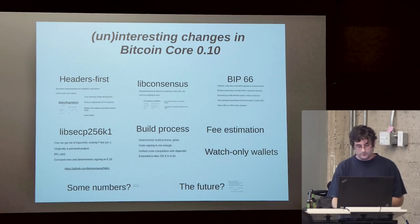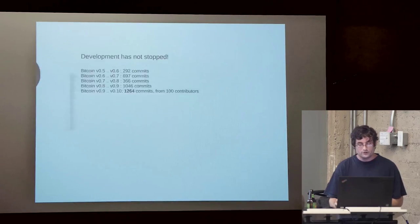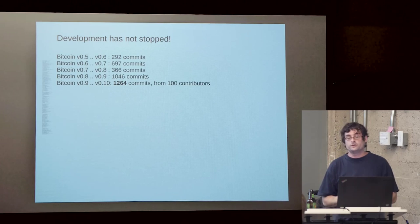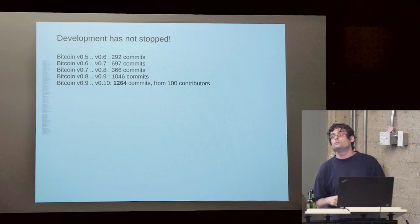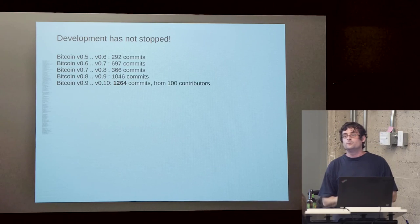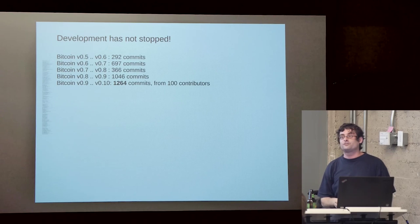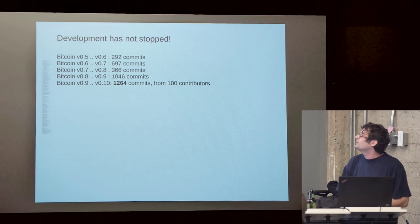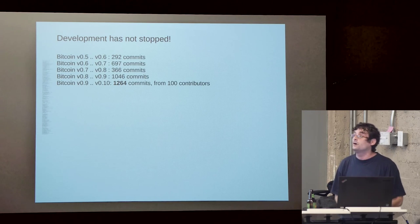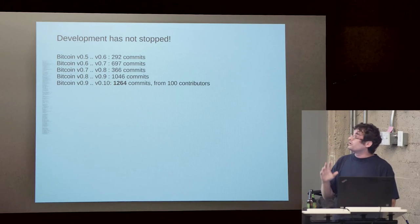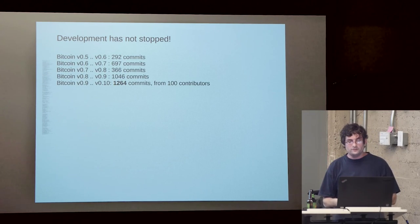Let me briefly talk about some numbers, just to show you that Bitcoin development has not stopped. It may not be the most glamorous things we are doing, but there is really a lot of work going on. The differences between incremental versions going back two or three years has really increased. In the last version we have apparently a hundred contributors who have worked on the code. There are detailed release notes and I definitely encourage you to go look at them.